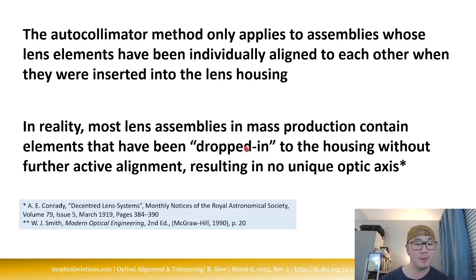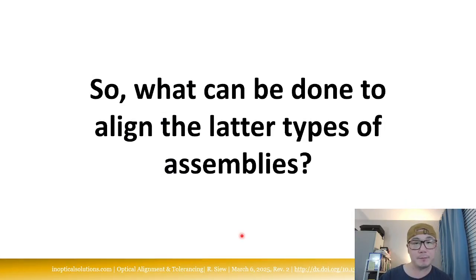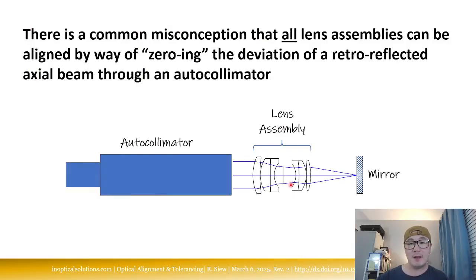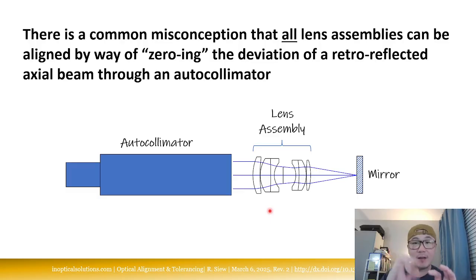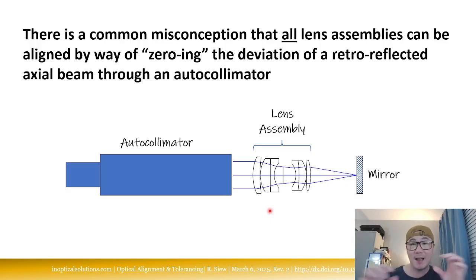If you want to know more about what I just said, you can look up these references. Conrady wrote a paper called 'Decentered Lens Systems,' and Warren J. Smith in his second edition of Modern Optical Engineering on page 20 talks about it as well. What happens is, in most mass-produced imaging lenses, the way they assemble the lens elements inside the housing is not by purposely aligning each element centered to the next. Each element is not necessarily purposely centered relative to the other elements — there's no optical axis.